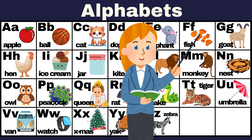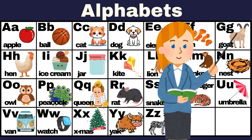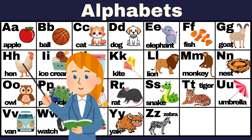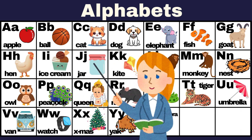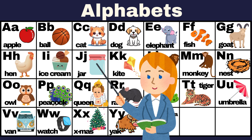F for Fish. G for Goat. H for Hen. I for Ice Cream. J for Jar.